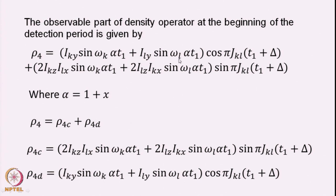The term ILY sin(ωL·α·t1) came from the evolution of the L spin during t1 plus delta, so it has frequency ωL, and ILY evolves in T2 with the frequency of the L spin — therefore this also produces a diagonal peak. So these two terms produce diagonal peaks in the final 2D spectrum, but the chemical shifts are multiplied by the factor alpha. Alpha is (1 + X), where X is a number you can choose — if X = 1 then alpha = 2 and chemical shifts are scaled by a factor of 2; if X = 0.5 then alpha = 1.5, and so on. This can be chosen depending upon how much you want to increase the separation between the peaks.